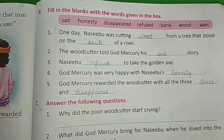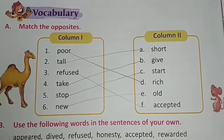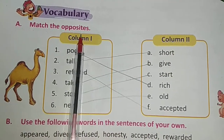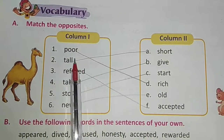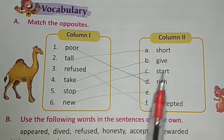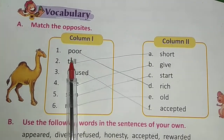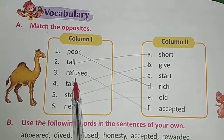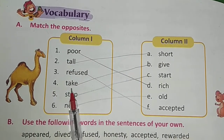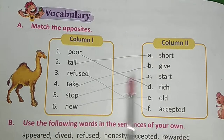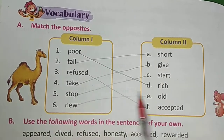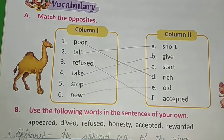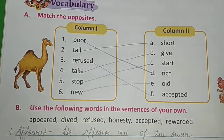Next, on page number 66, match the opposites. Column 1 ko column 2 mein jo points hain unke saath sahi match karna hai. Poor → rich, tall → short, refused → accepted, take → give, stop → start, new → old. Ye to easy hai, haame match karna aata hai. Toh ye bhi aapko revise karna hai.